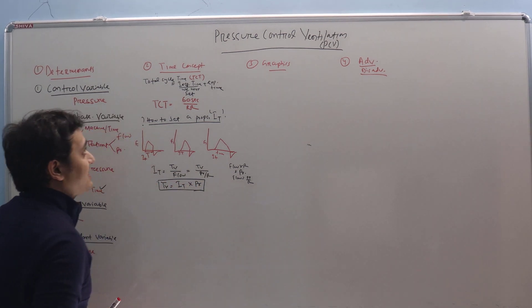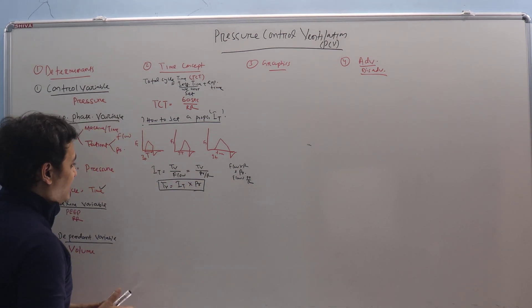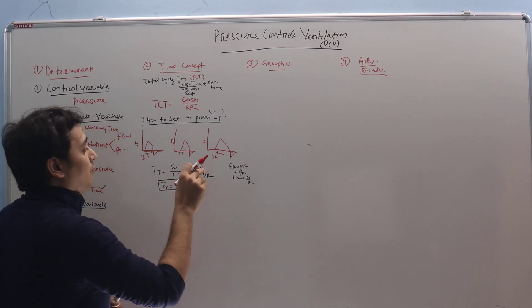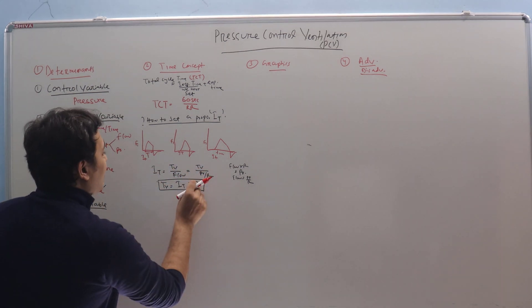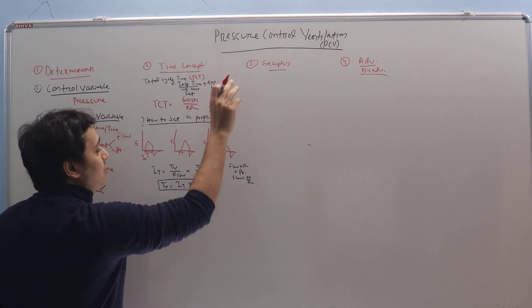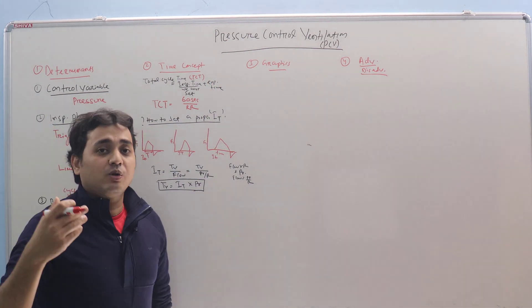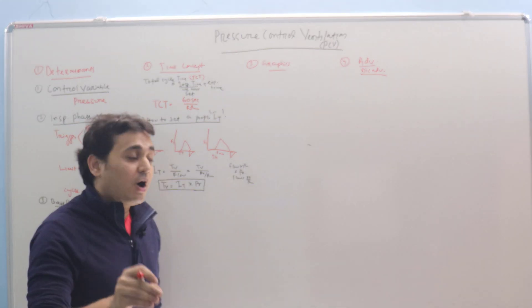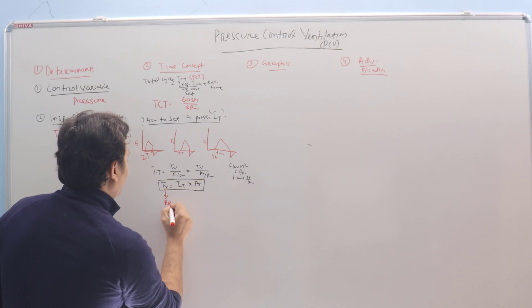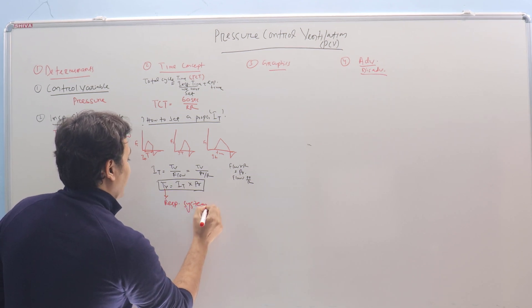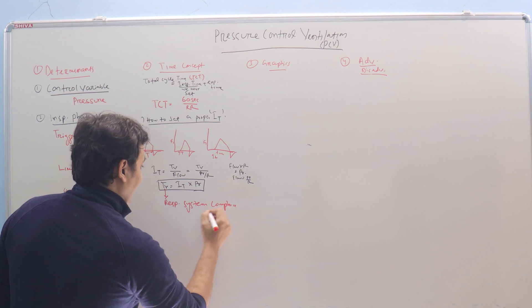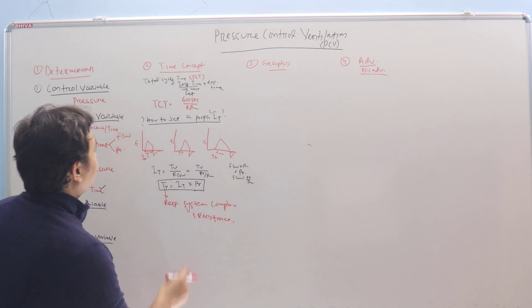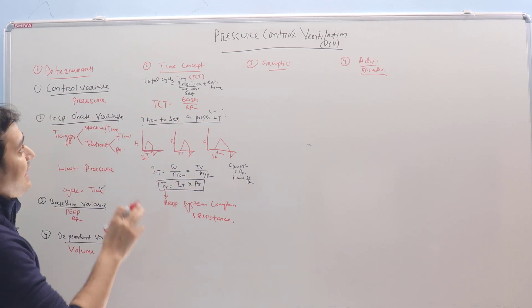So what are the determinants of tidal volume in pressure control ventilation? First is Inspiratory Time — optimize it by looking at the flow-time scalar. If volume is still not adequate after optimization, increase the pressure control level you have set, keeping in mind you cannot go beyond 30 cm of water. Even after that, volume may not be adequate because it also depends on resistance and compliance.